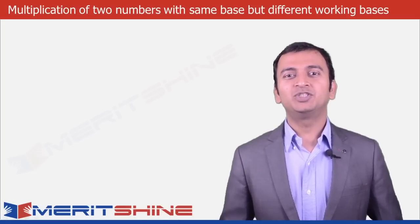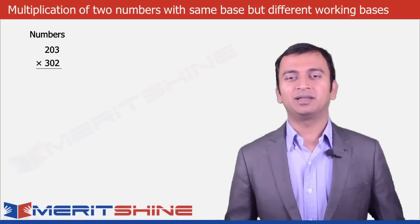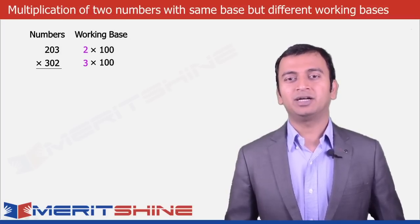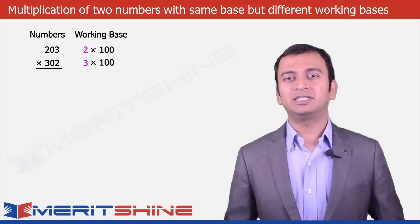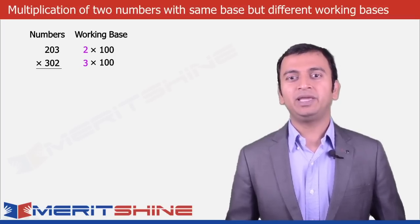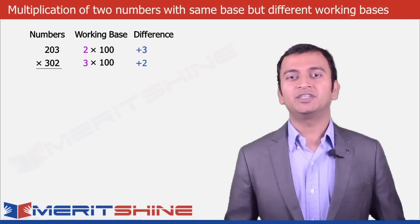Let us try 203 x 302 as an example. Here our working bases would be 200 and 300 respectively — 2 the multiplier into base 100 for 203, and 3 the multiplier into base 100 for 302. Our differences would be plus 3 and plus 2.